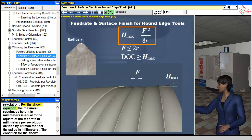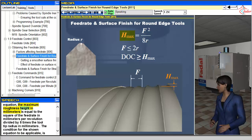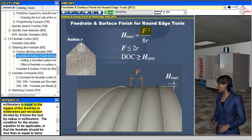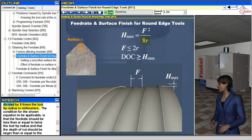For the shown equation, the maximum roughness height in millimeters is equal to the square of the feed rate in millimeters per revolution, divided by 8 times the tool tip radius in millimeters.